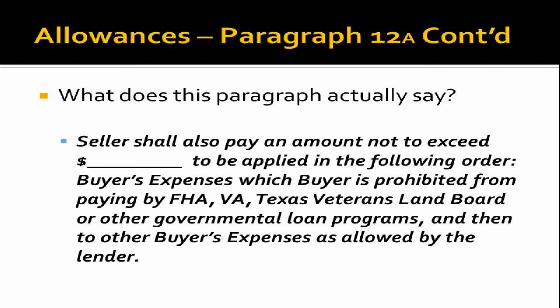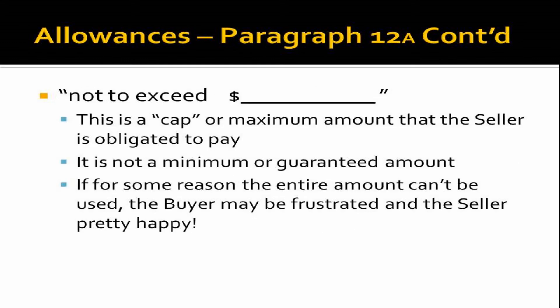The clause works pretty well as long as we understand what it means, don't contradict it, don't unintentionally double up the closing costs, and understand how it affects a buyer's lender. The paragraph reads: 'Seller shall pay an amount not to exceed blank dollars, to be applied in the following order,' and the very last clause is 'and then to other buyer's expenses as allowed by the lender.' That last phrase is key to getting the full benefit of the allowance. The 'not to exceed' amount is a cap or maximum — it is not a minimum or guaranteed amount.